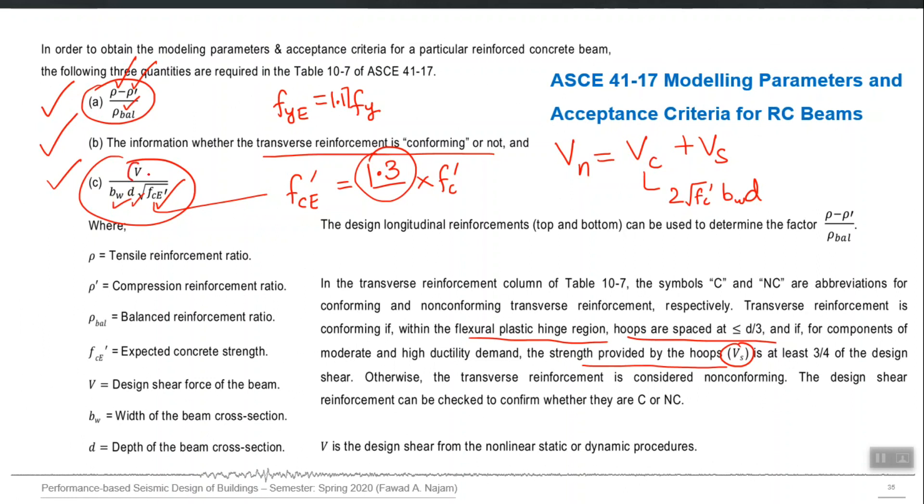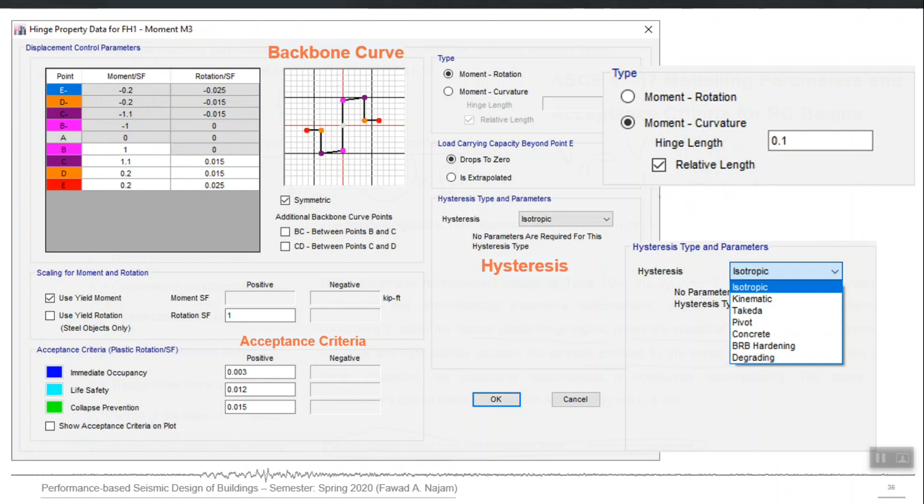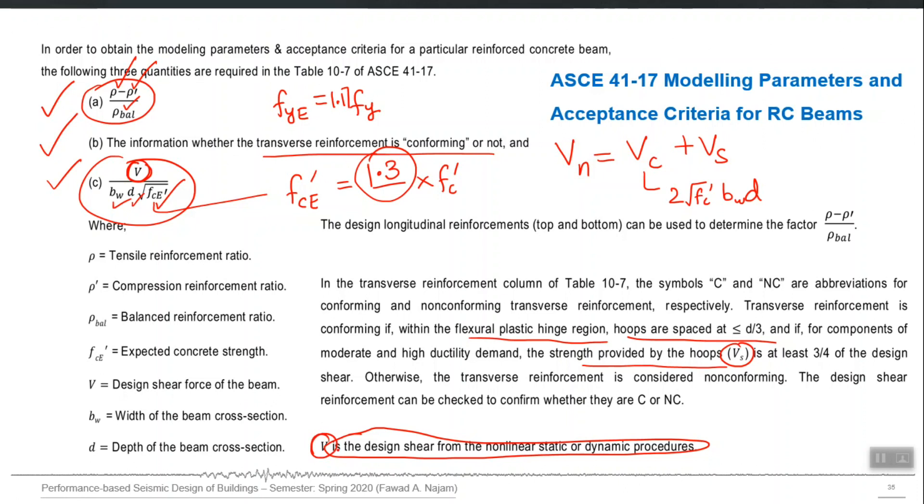And then we are left with this V. V is actually the design shear from the nonlinear static or dynamic procedure. Actually we have not yet performed that nonlinear analysis, so we cannot exactly estimate what this V should be. It is defined as the shear which will be in your beam when the plastic hinge will be forming. You cannot estimate it before performing nonlinear analysis, but there are ways which you can estimate that shear, and there is one method I will quickly go through which is based on the capacity design procedure to estimate that V. In any ways, you can get it from some design load combination also and then use it as this number.